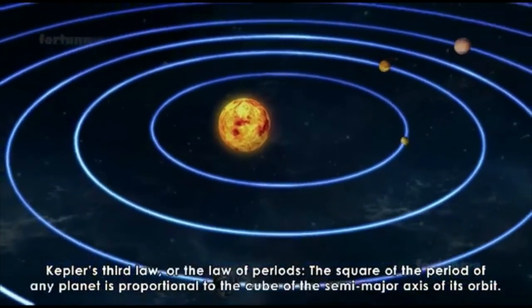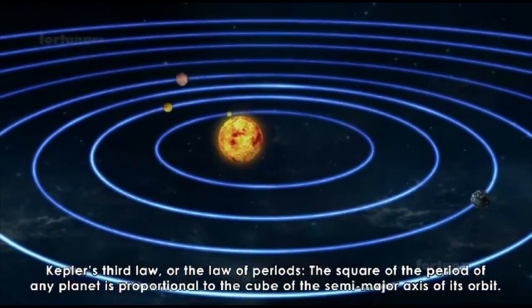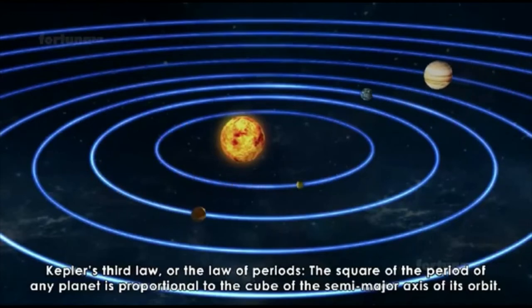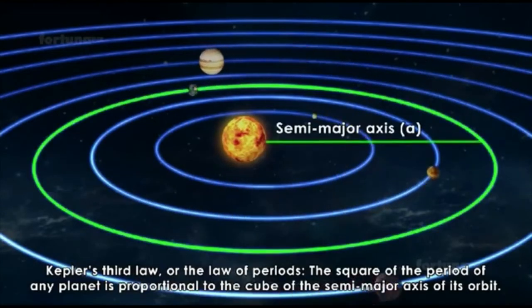Kepler's third law, or the law of periods, states that the square of the period of any planet is proportional to the cube of the semi-major axis of its orbit.